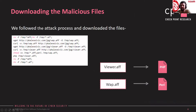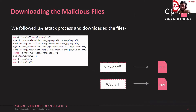We can assume this is a first indicator that the campaign is live and has new activity. Our next step was to trace the attack flow. We downloaded both AFF files and discovered that those files are actually PHP and Perl files, which we could also assume from the PHP and Perl commands in the base64 blob.